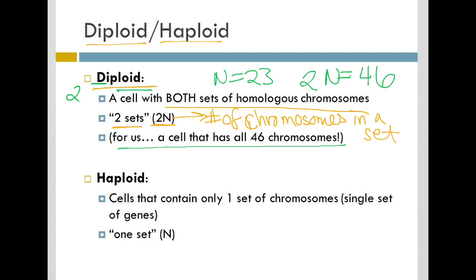There are, at certain times in our life cycle, where we have haploid cells. A haploid cell is a cell that contains only a single set of chromosomes and therefore a single set of genes. Haploid meaning one set. And if diploid was 2n, haploid is just n.